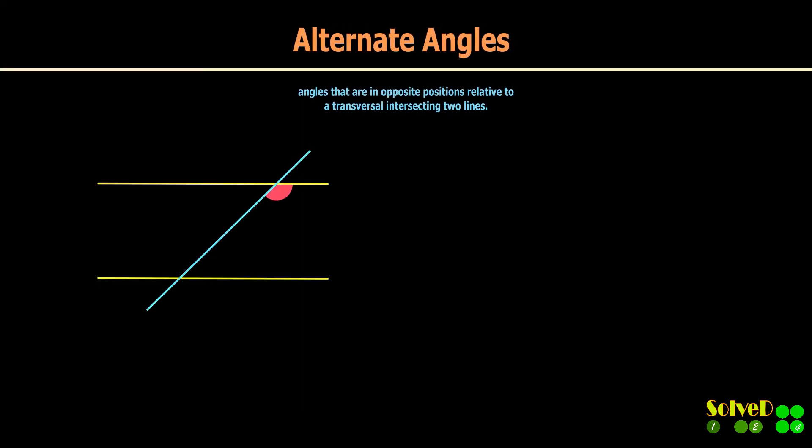Alternate angles: If the crossed lines are parallel, then alternate angles are equal.